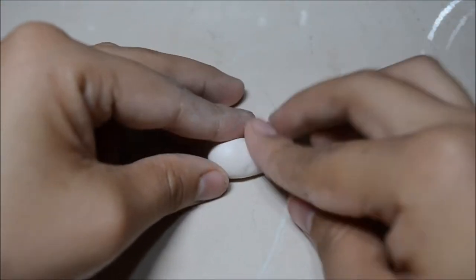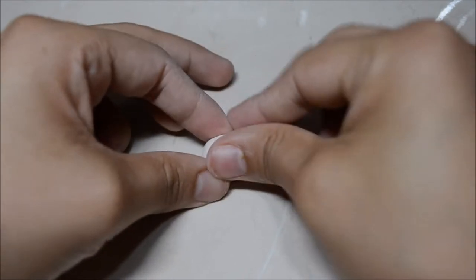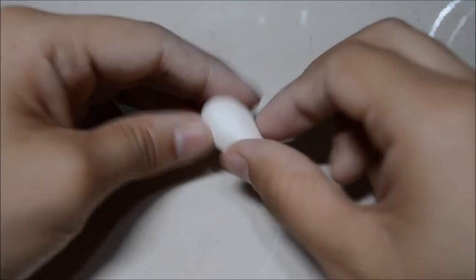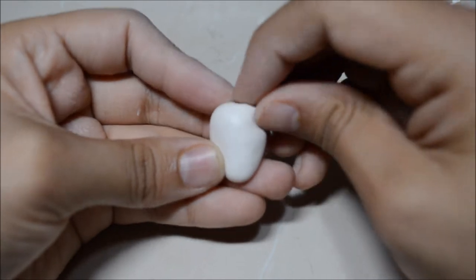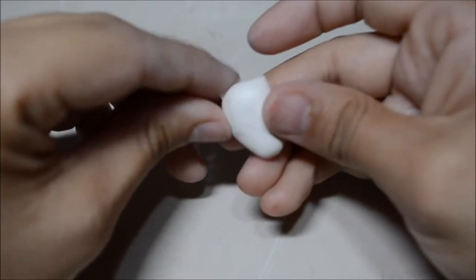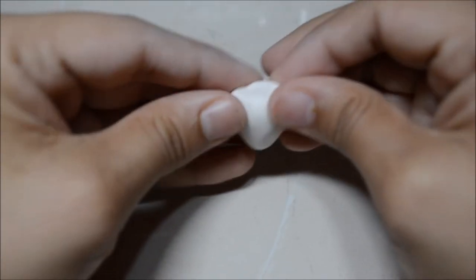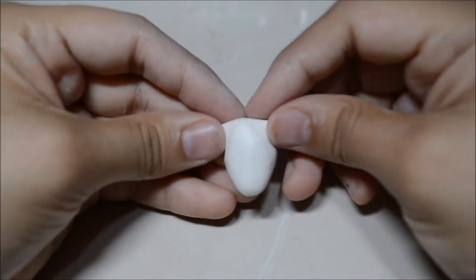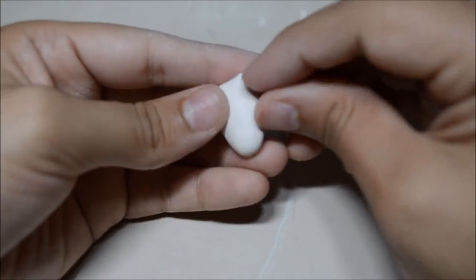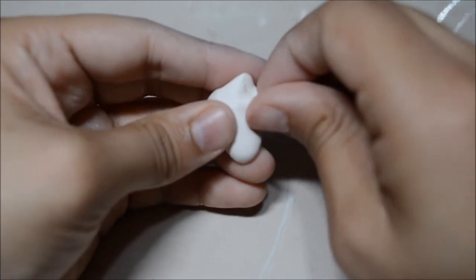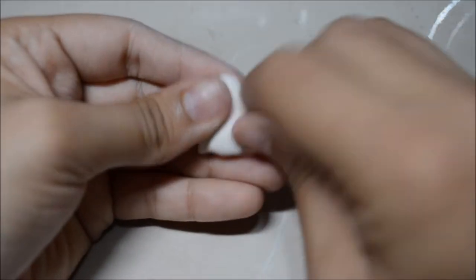I'm rolling it into a teardrop shape, and then pinching two little like, I guess you could call them horns. Those are gonna be where the horns are gonna attach. And then another two little bumps right below that. It's kind of hard to explain, it's better to see it.